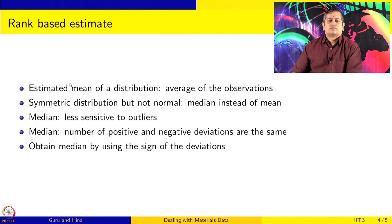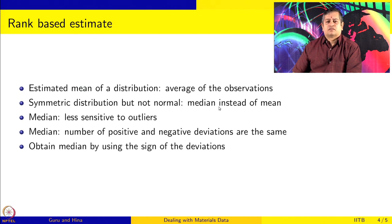As a rank-based estimate, the estimated mean of a distribution is basically the average of the observations. However, if you assume that your distribution is symmetric but not normal, you can use the median instead of the mean, because the mean is sensitive to outliers but the median is not.